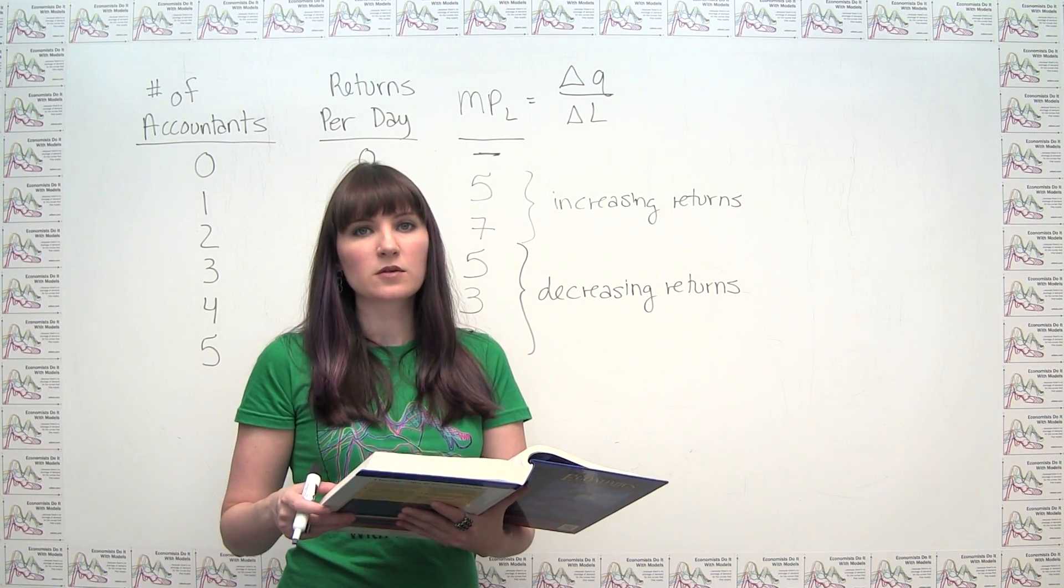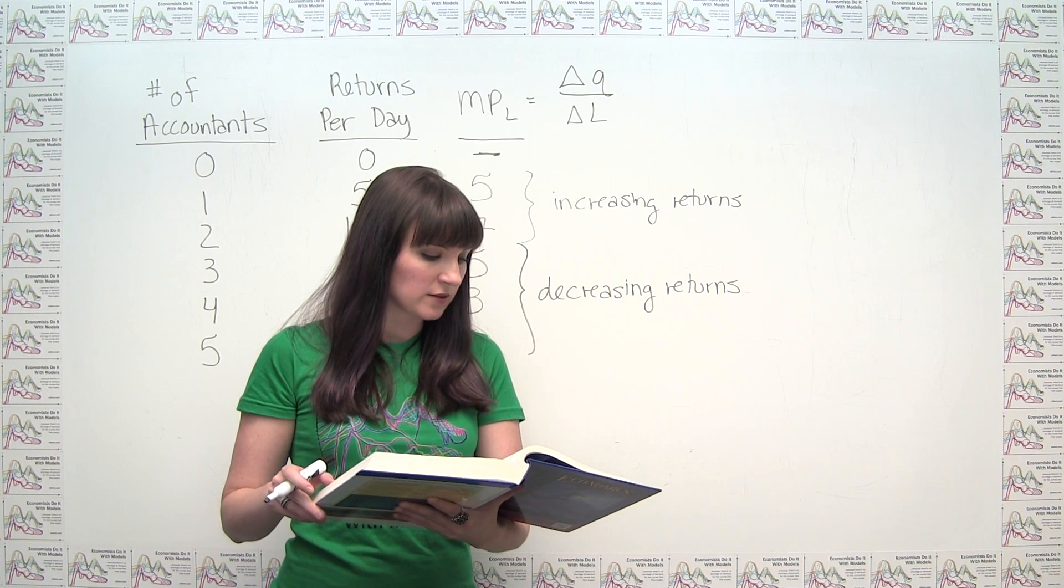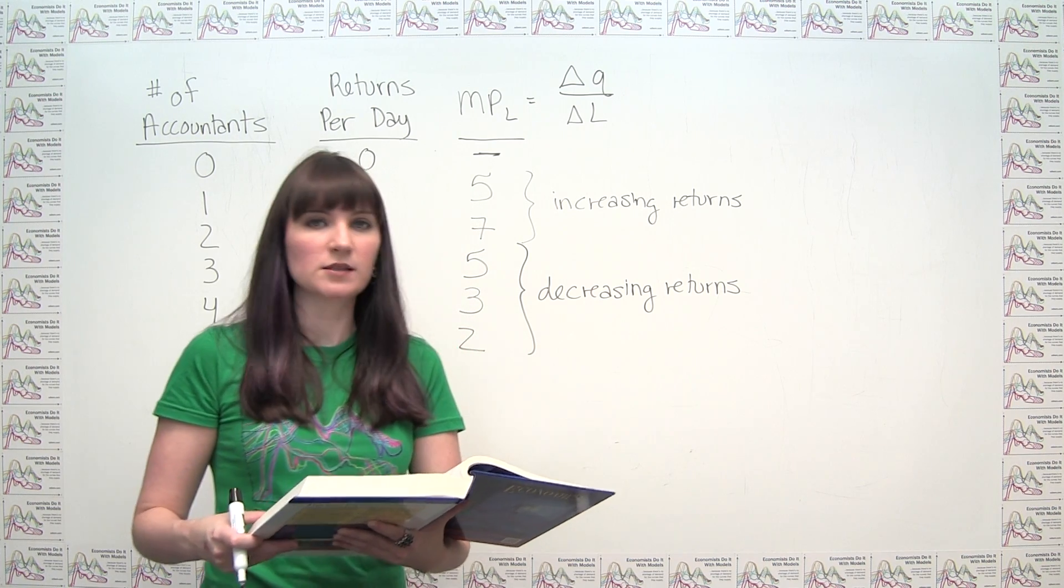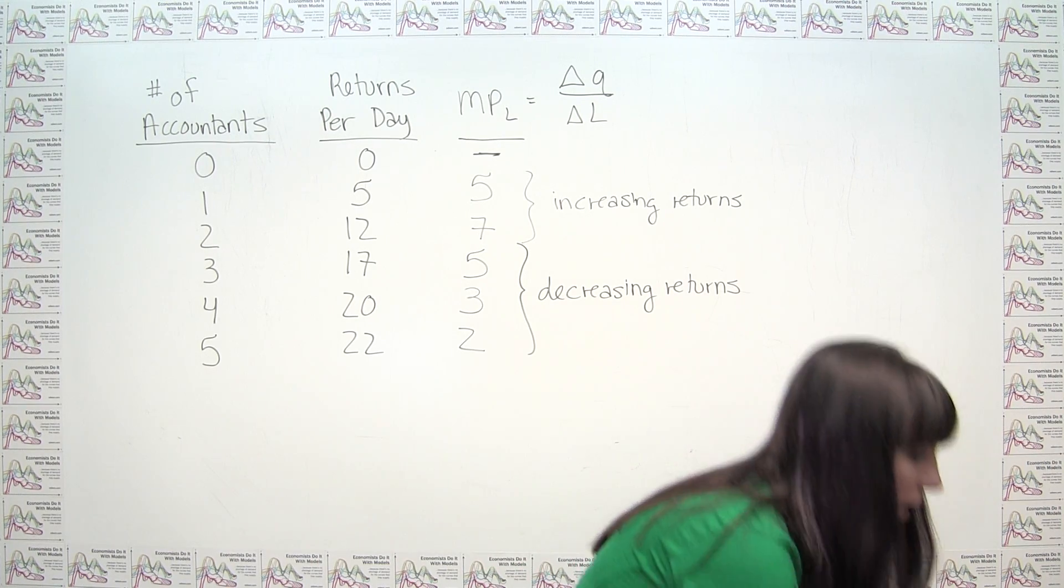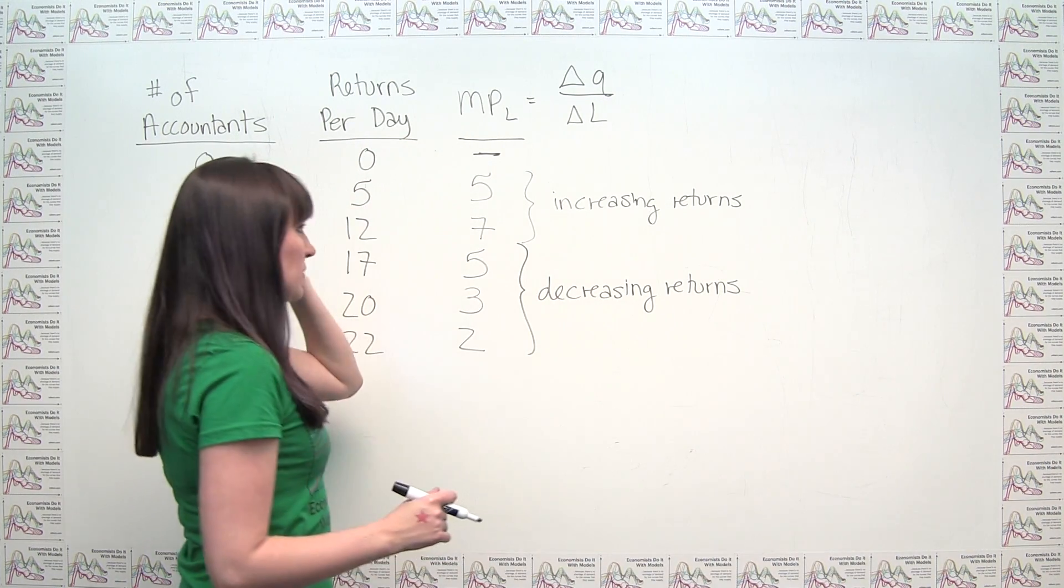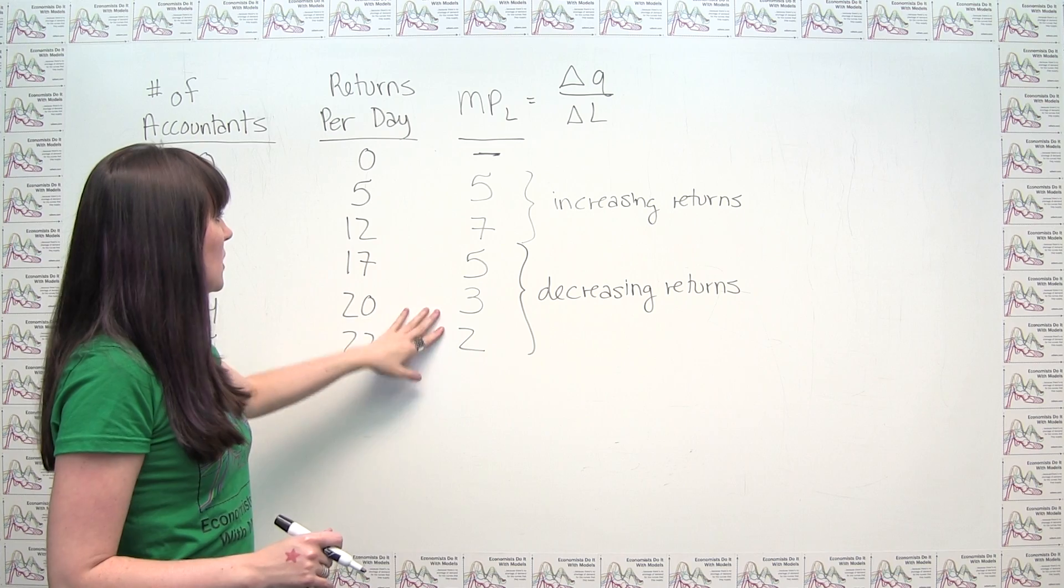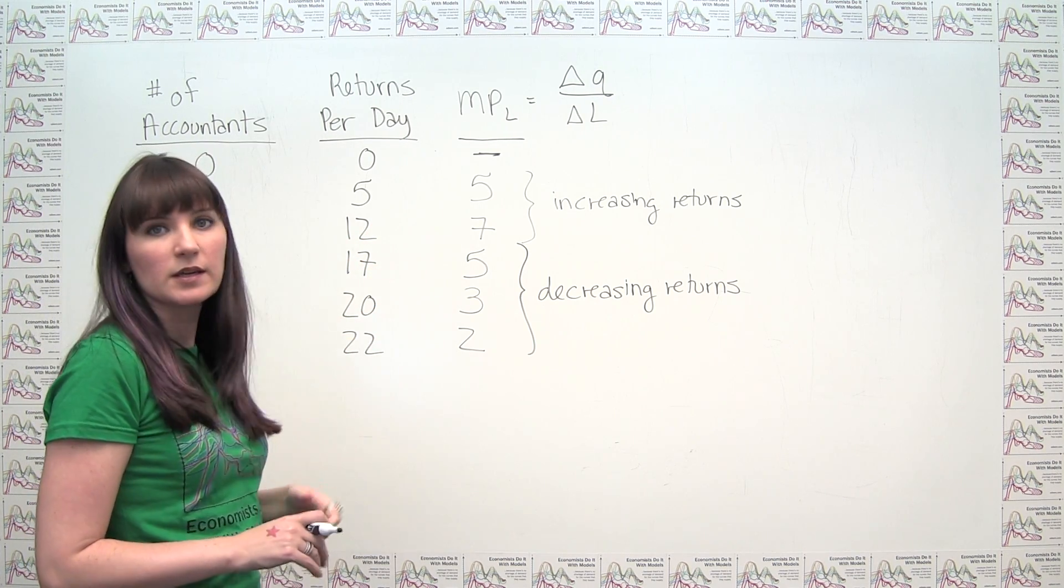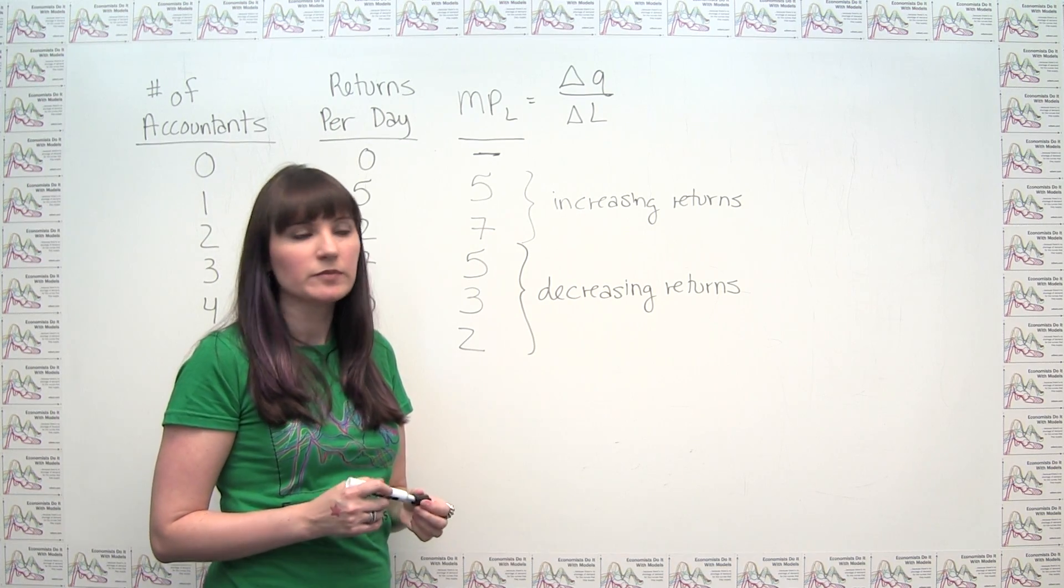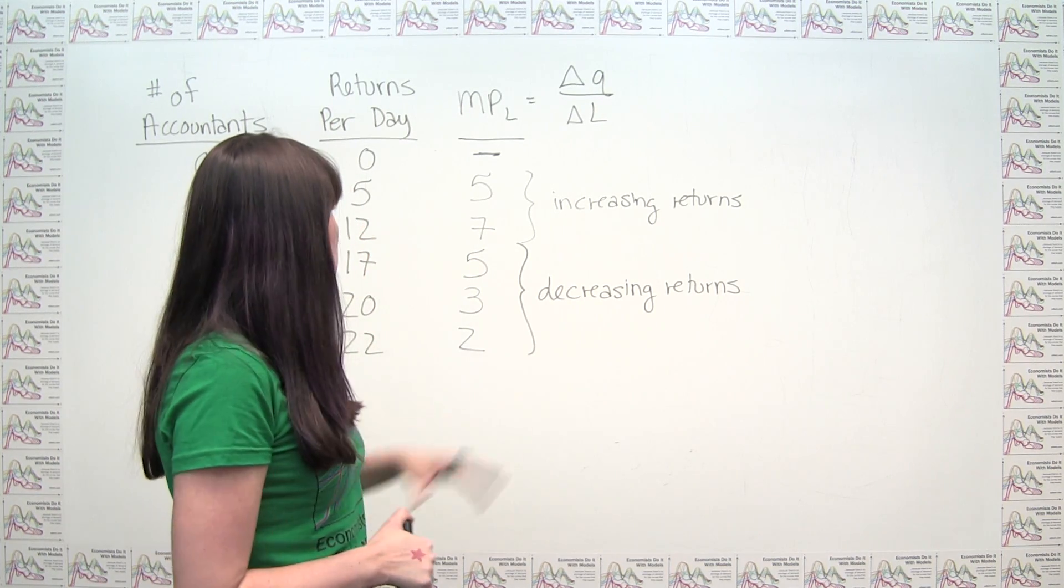The last part of the question says, explain why the marginal product of labor might behave this way in the context of an accounting firm. We can think about why, maybe for a while, we would get increasing returns to labor, and then we would get this turnaround where we start getting decreasing returns to labor.